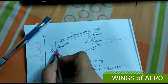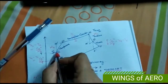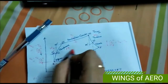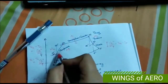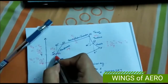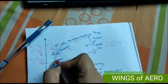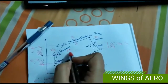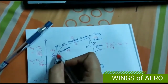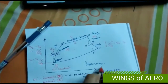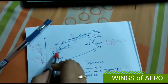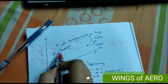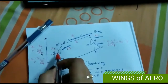Point 0-1 is the entrance of the compressor. From 0-1 to 0-2, the pressure increases as air moves through the compressor. As pressure increases, temperature also increases with respect to entropy. Here again we have two points: 0-2 for the actual condition and 0-2 dash for the isentropic condition.